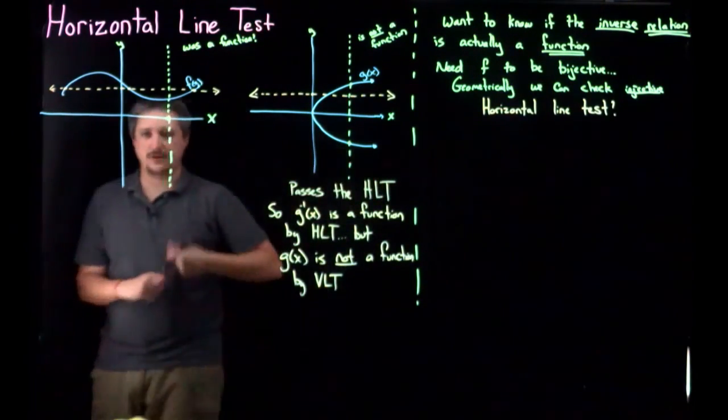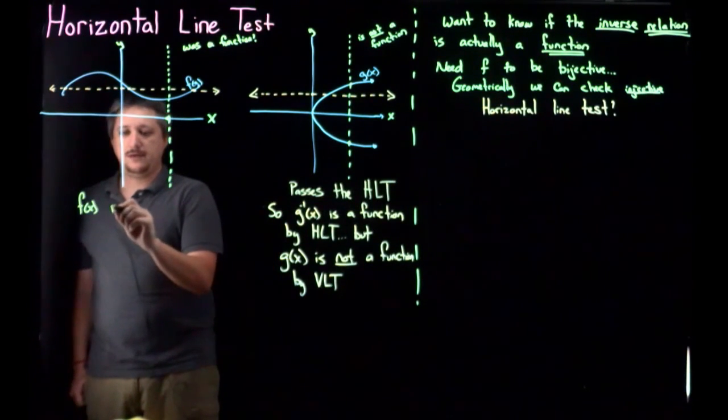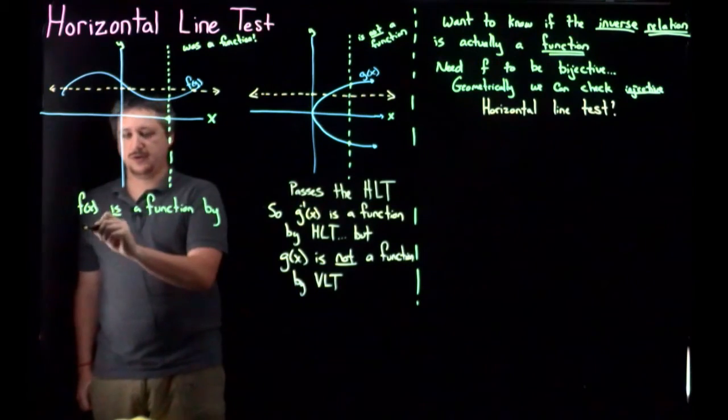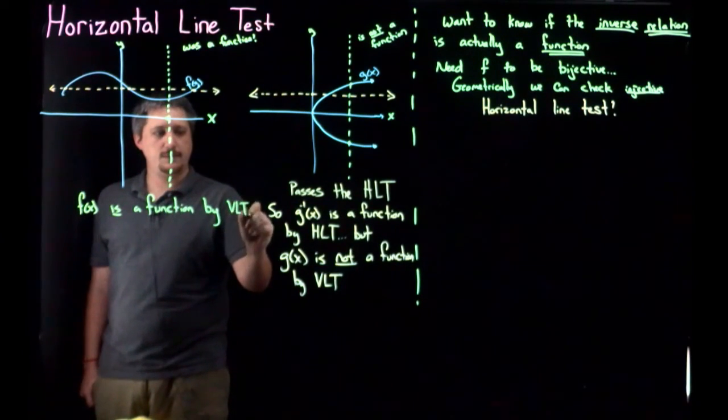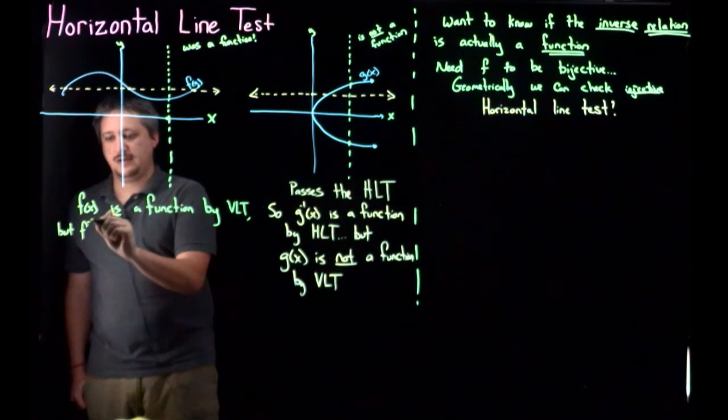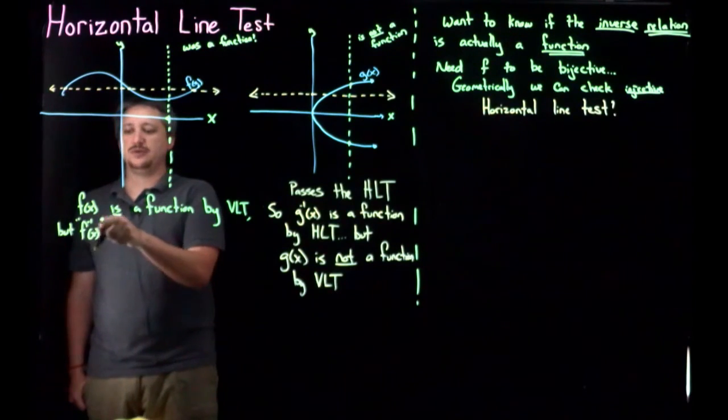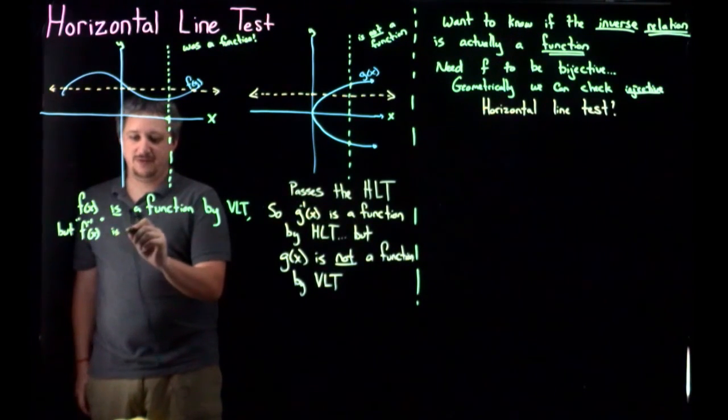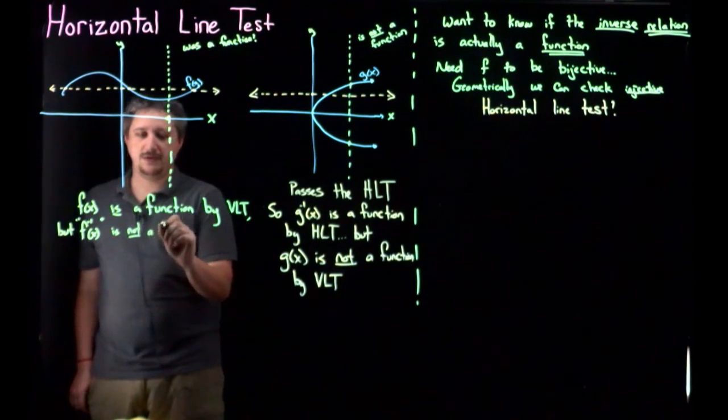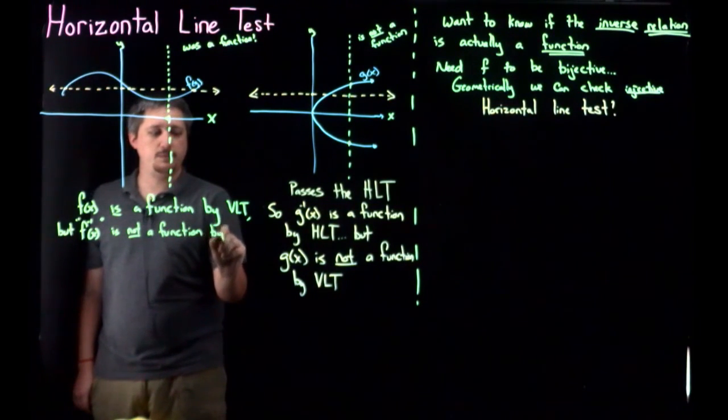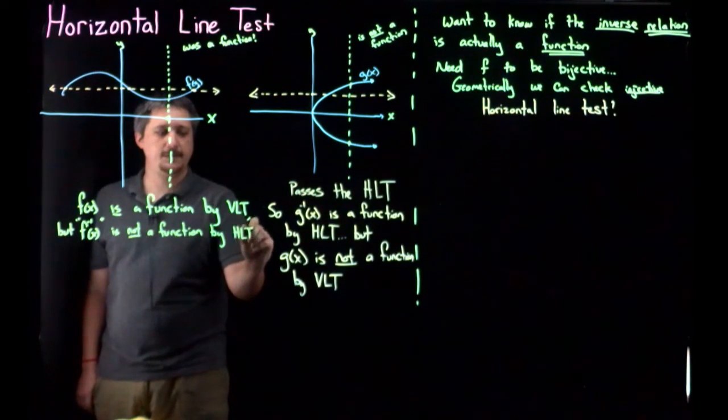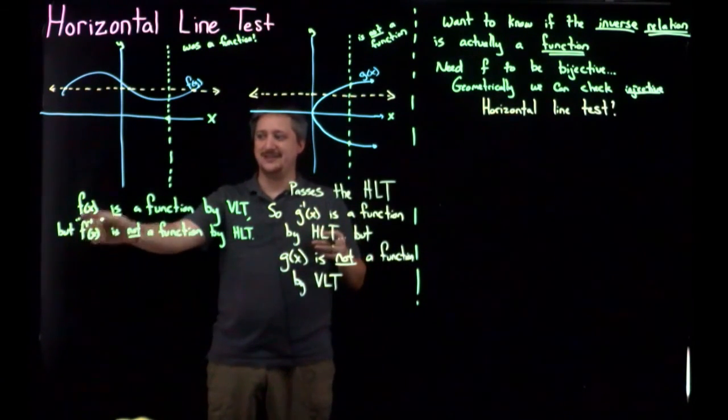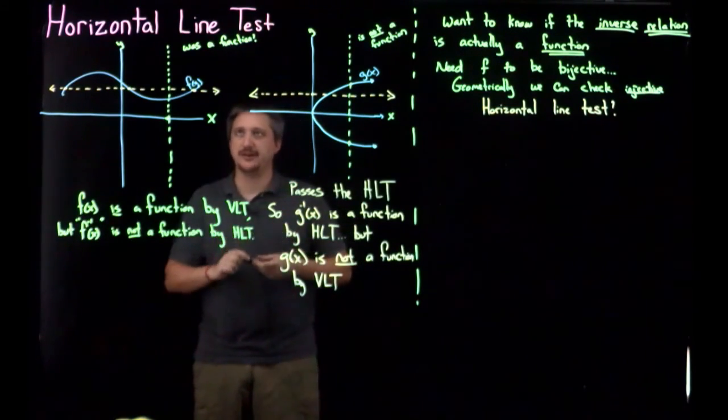So here, f of x is a function by the vertical line test, but f inverse of x, which I'm going to put in quotes because I'm misusing this because we use this notation specifically to say something is a function. What I'm about to clarify is not a function by the horizontal line test. So this is sort of bad notation, but I really am talking about the inverse relation, trying to go the other way and saying, this doesn't actually work because it's not actually a function by the horizontal line test.